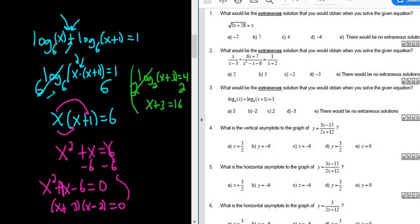So you have a product equal to 0, so we set each factor equal to 0. So x + 3 equals 0, and x - 2 equals 0. Then you can solve for x. Subtract 3, you get negative 3. Add here, and you get 2.